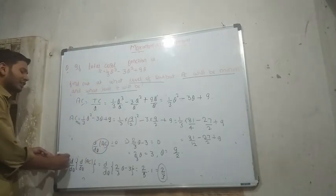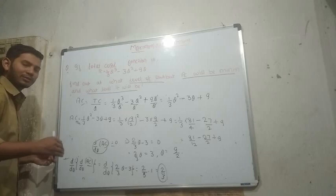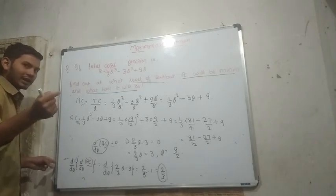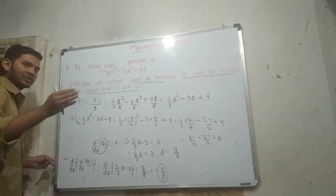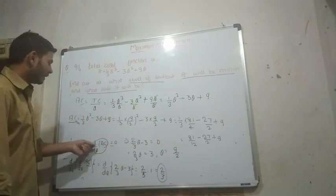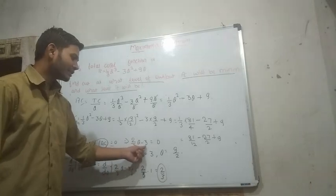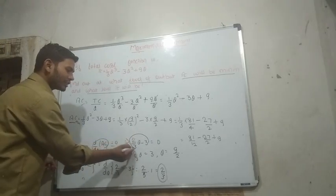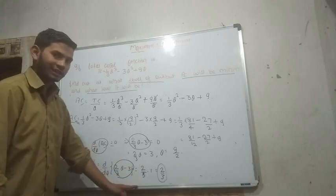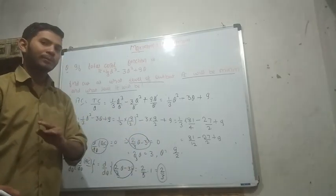The second condition: if D² by DQ² is greater than zero, then it will be minimum, and if it is less than zero, then it will be maximum. Now, what we have to do with D/DQ of AC is: 2/3Q minus 3, so we have to do the differentiation and set it to zero.